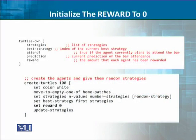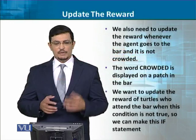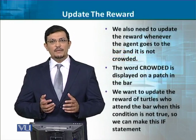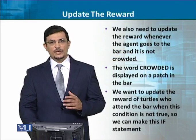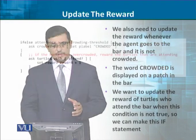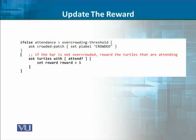The internal variable we have added is reward. The reward will tell us how an agent performs — the other things are already in the existing model. This reward we have to add, and when we create agents we have to initialize and set reward to 0 at the beginning. We then have to add and update this reward.